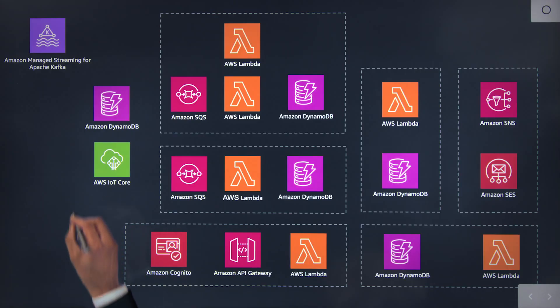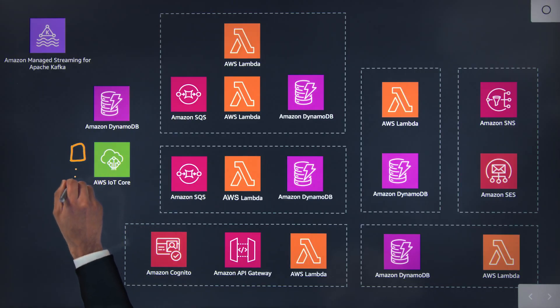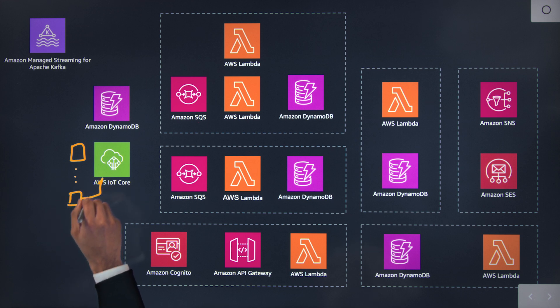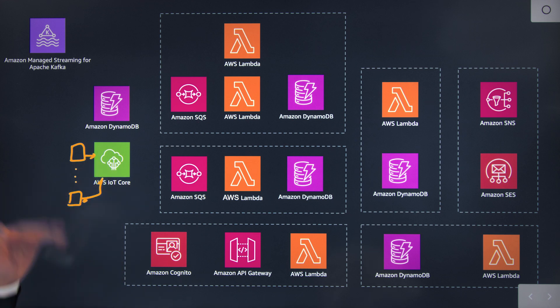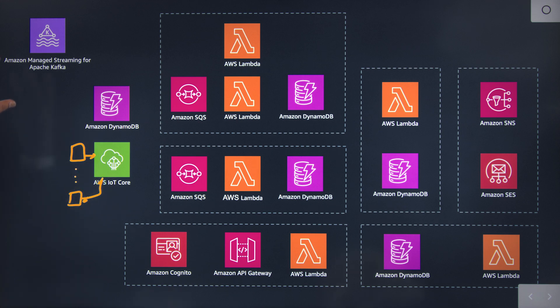Let's get started with AWS IoT Core. This is the center place, and in our architecture we have a bunch of machines. Those are connected with the IoT Core. There are approximately 40 mills connected over here, and we also have apps from which we get the data — approximately 20 machines.